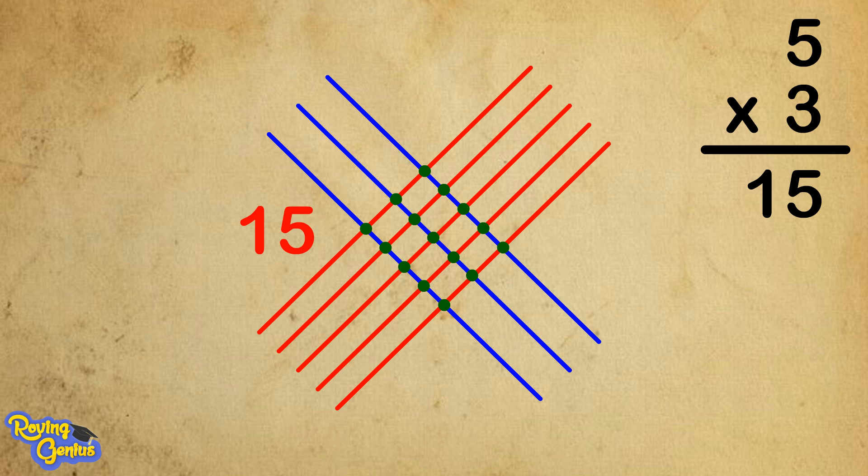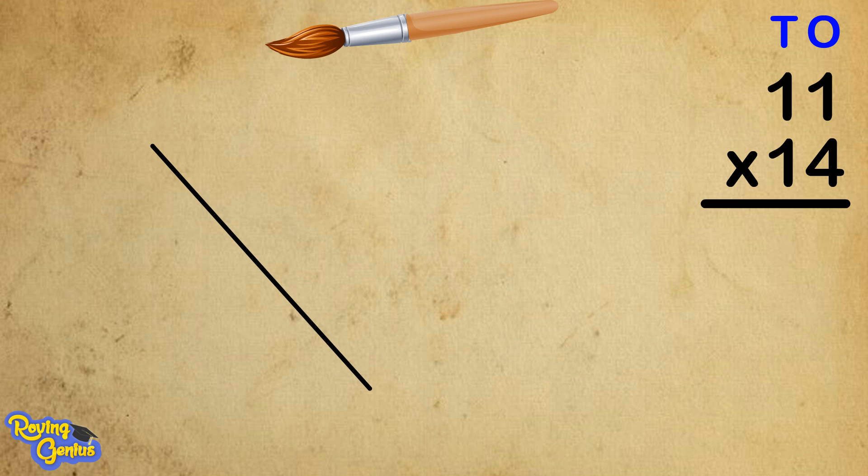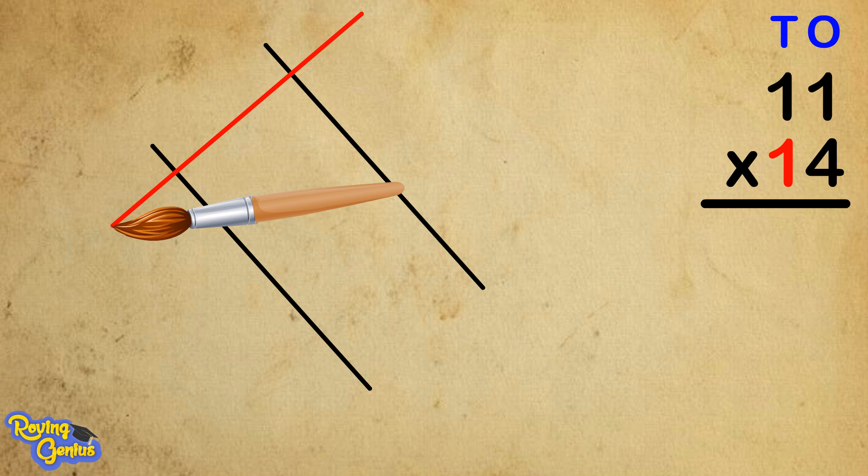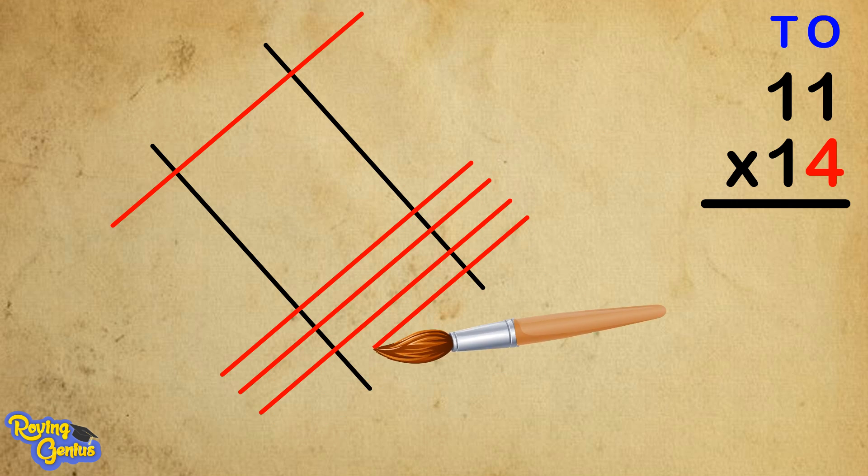Now let's try something difficult: 11 multiplied by 14. Draw one line, then leaving some space we draw one more line. This represents 11. Now cross these lines with one line, leaving some space, draw four more lines. This represents 14.